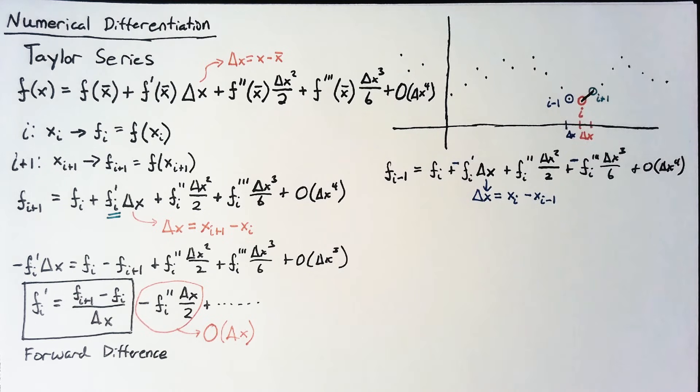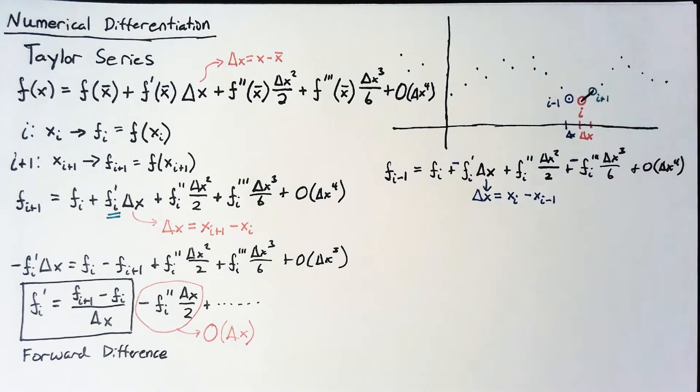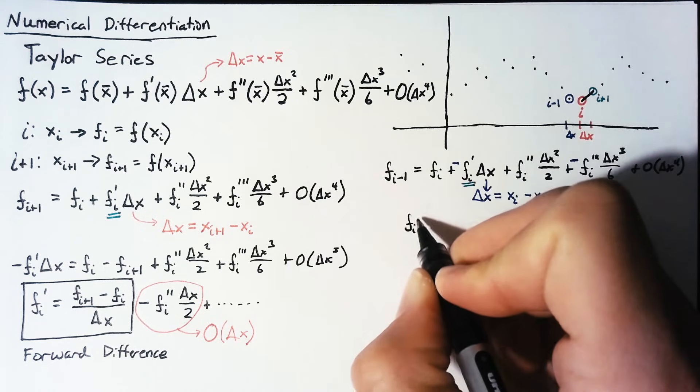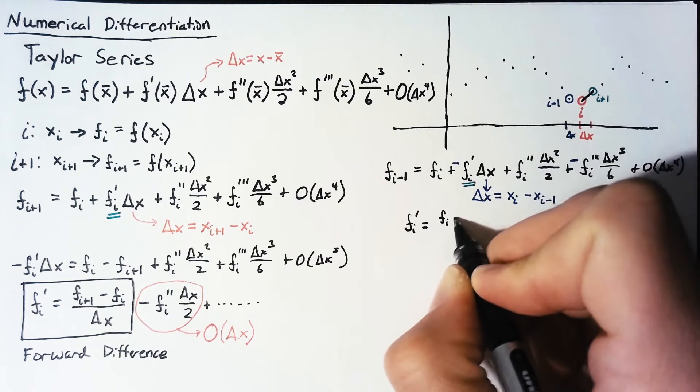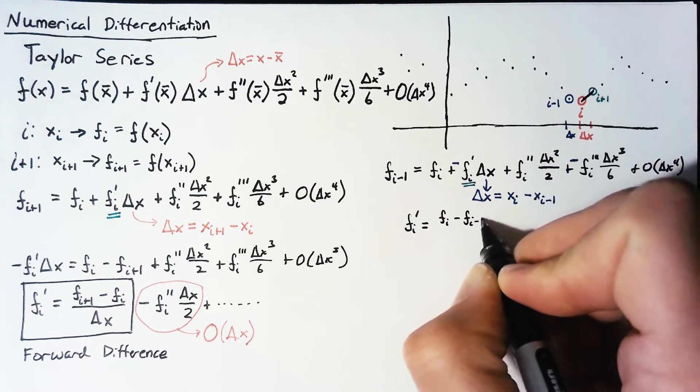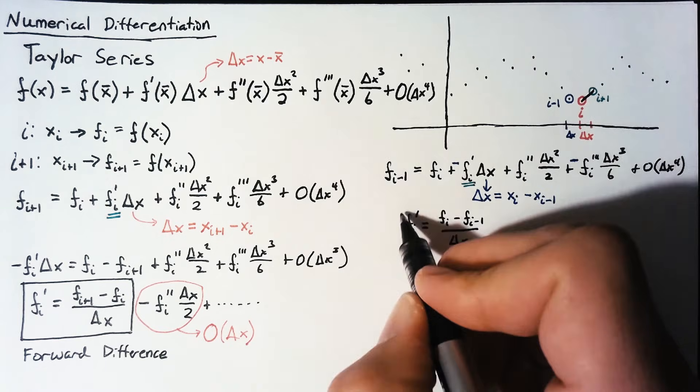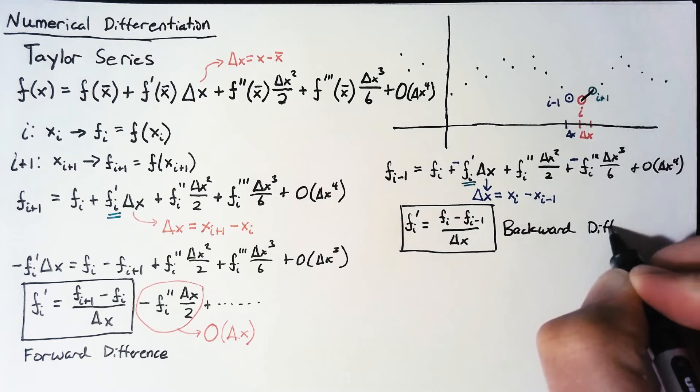So, now we go through the same process of solving for this. But really, remember that all we want here is our first derivative, this fi prime. Solving for that yields, fi prime is going to be equal to f of i minus f of i minus 1 divided by delta x. But this right here, this piece, is our backward difference.